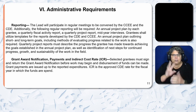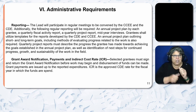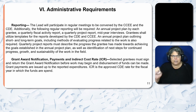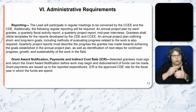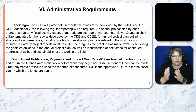Section 6, Administrative Requirements — Reporting: The LEAD will participate in regular meetings convened by the CCEE and CDE. The following regular reporting will be required: an Annual Project Plan by each grantee, a quarterly fiscal activity report, a quarterly project report, and mid-year interviews. Grantees shall utilize templates developed by the CDE and CCEE. Quarterly project reports must describe the progress the grantee has made towards achieving the goals established in the Annual Project Plan, as well as identification of next steps for continued progress, growth, and sustainability of the work in the field.